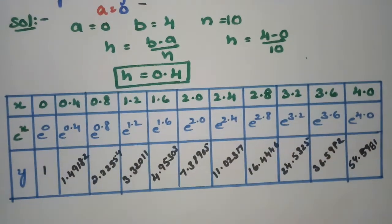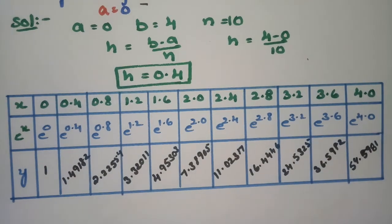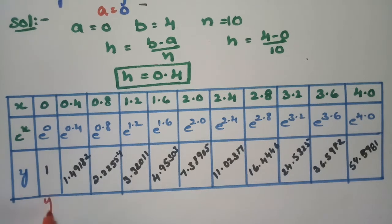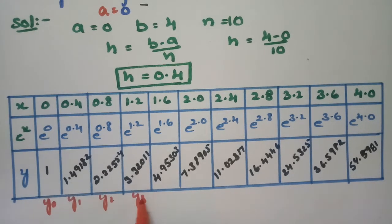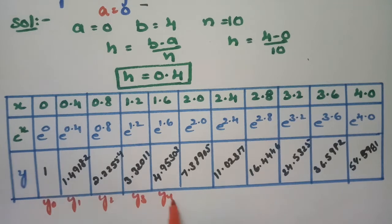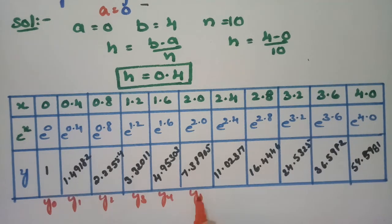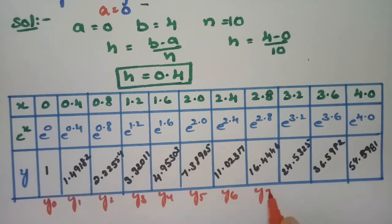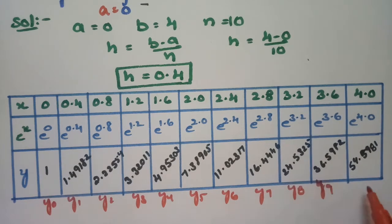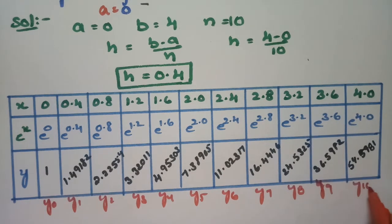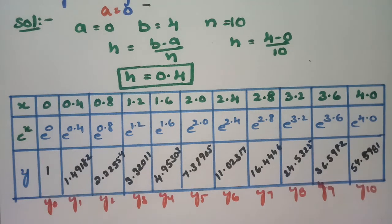These are all the values which we have to calculate. We name them as y0, y1, y2, y3, y4, y5, y6, y7, y8, y9, and y10. Total we have 11 ordinates.